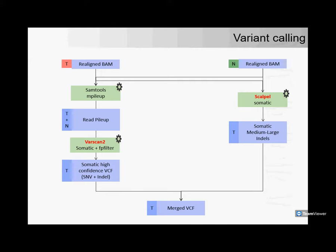For the variant calling process, once the realigned BAM files for tumor and normal are available, I employ two variant callers. The first is Varscan2 in combination with Samtools — a fairly robust, general-purpose variant caller that does a good job at calling SNVs and many indels in the small to medium range. It has the ability to further process in somatic mode, moving through per locus of both tumor and normal BAM files, using a heuristic approach to make a confident call as to whether a variant is truly somatic, and associating a p-value with that.